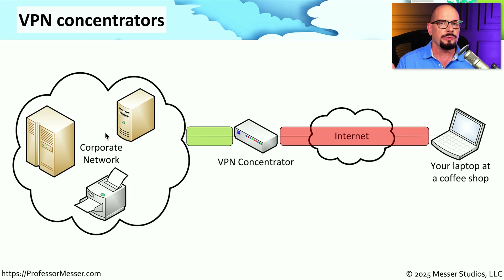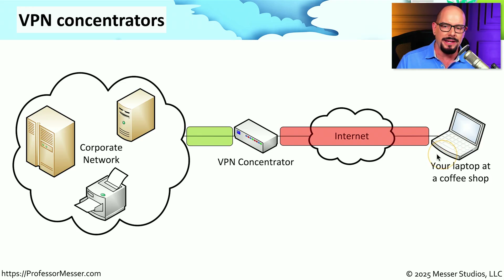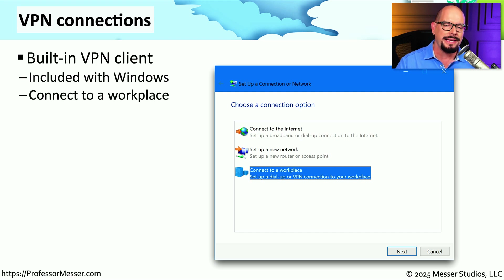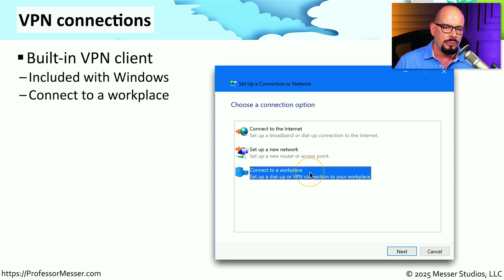To send a response back to your laptop, the process repeats by encrypting all of the data on the concentrator, sending it across the network, and sending it finally to your laptop where it is decrypted for your local use. The VPN concentrator you're using may require separate software that you install onto your laptop, but Windows also includes a built-in VPN client that might also apply. You would find that under the Setup Connection or Network dialog box.